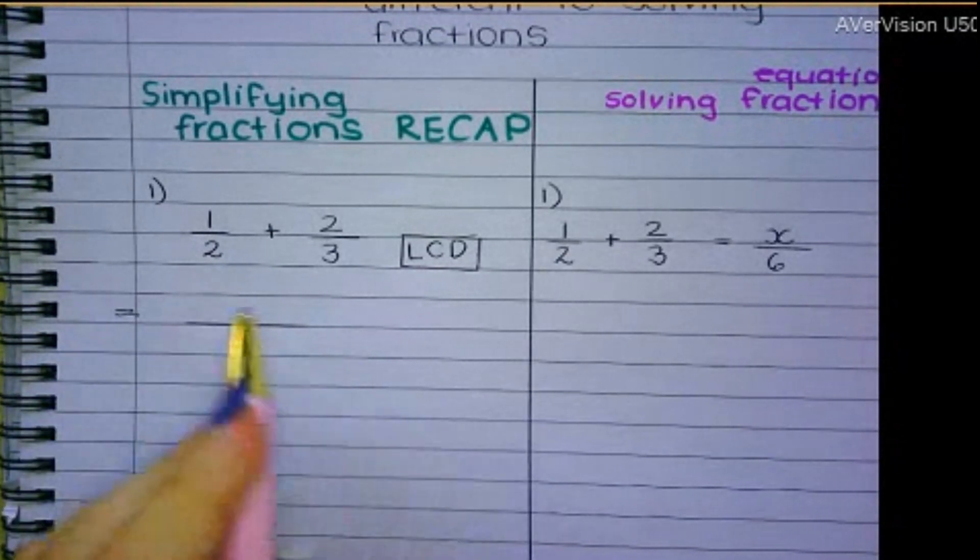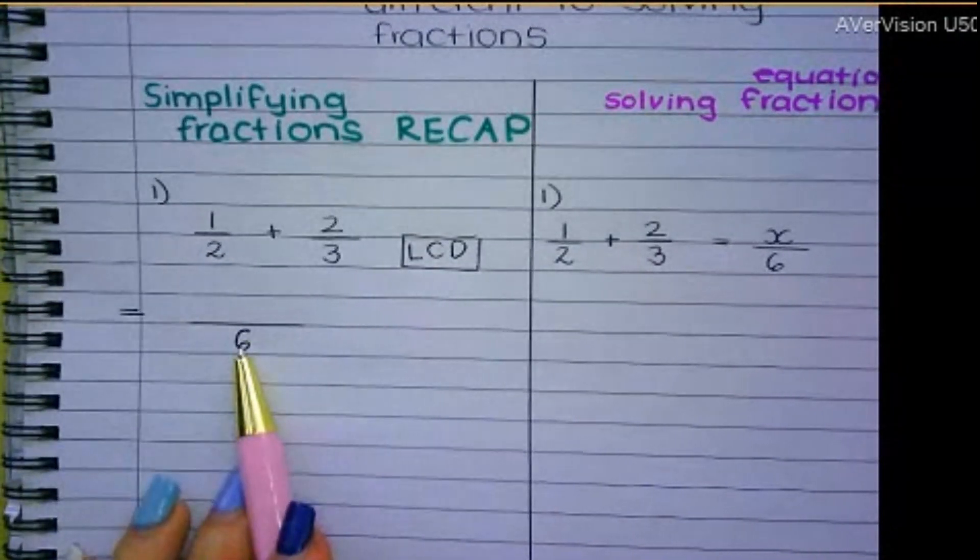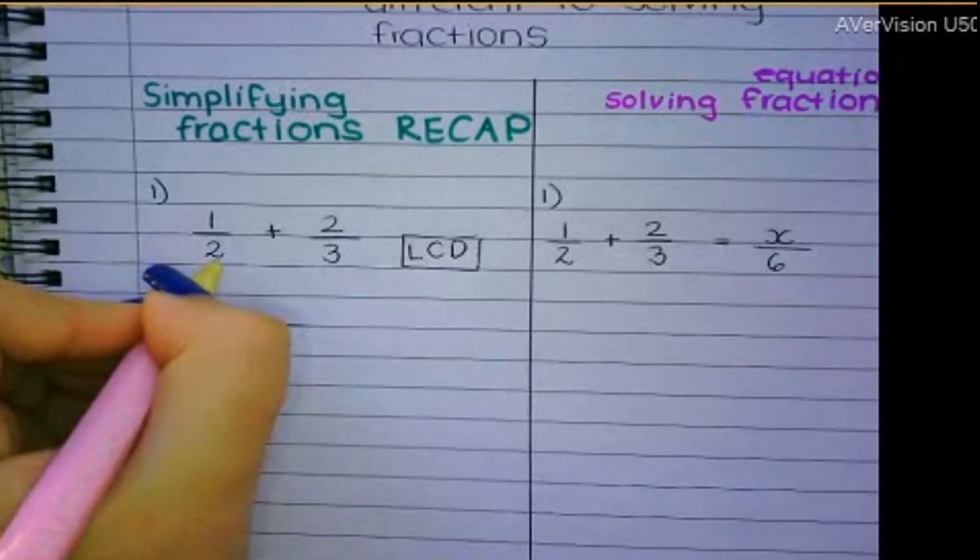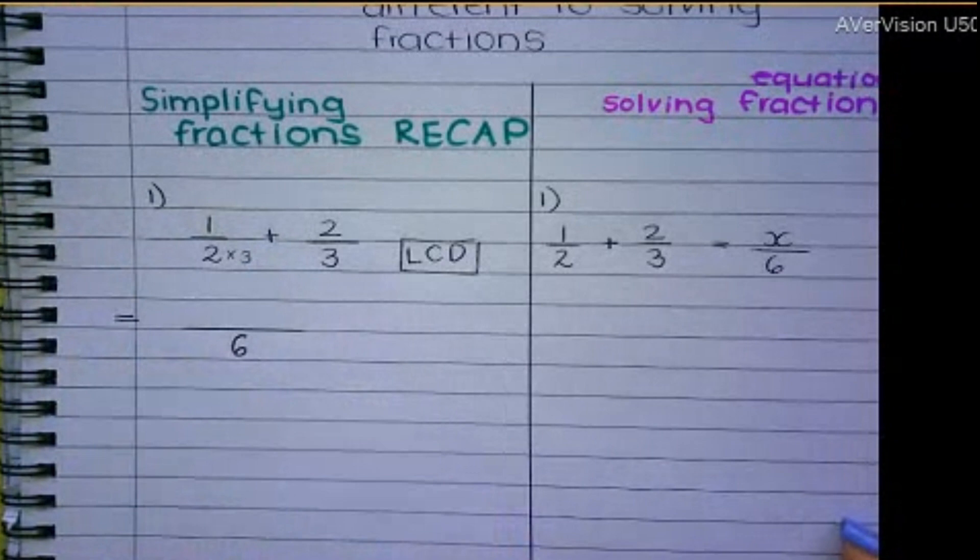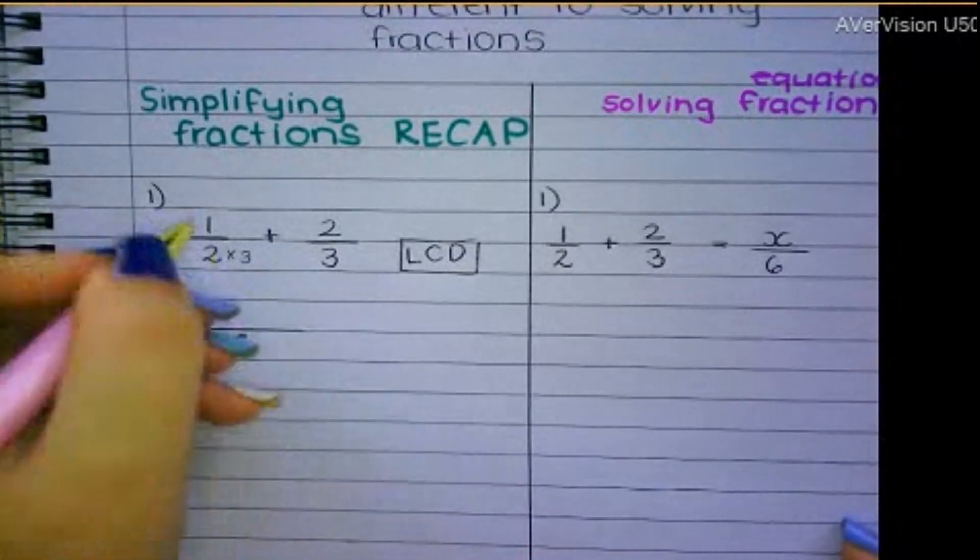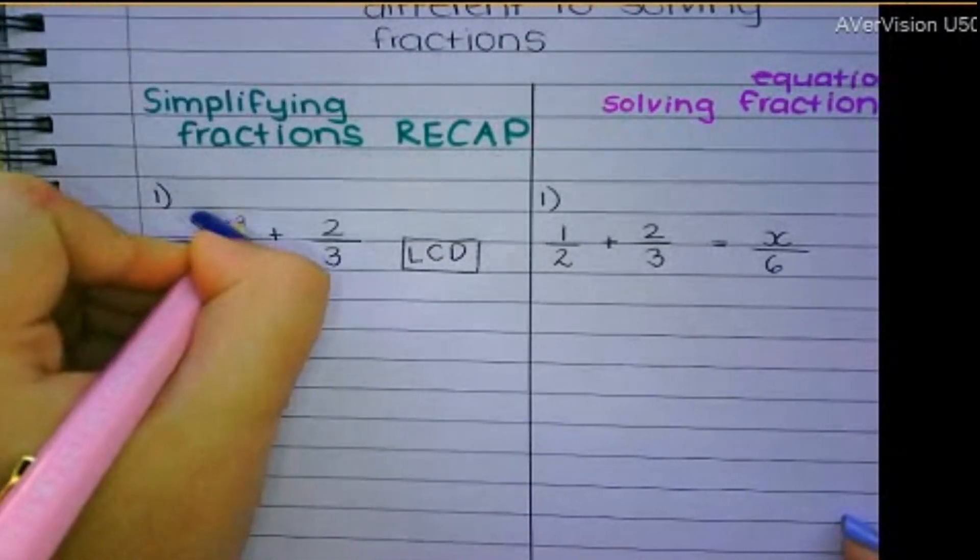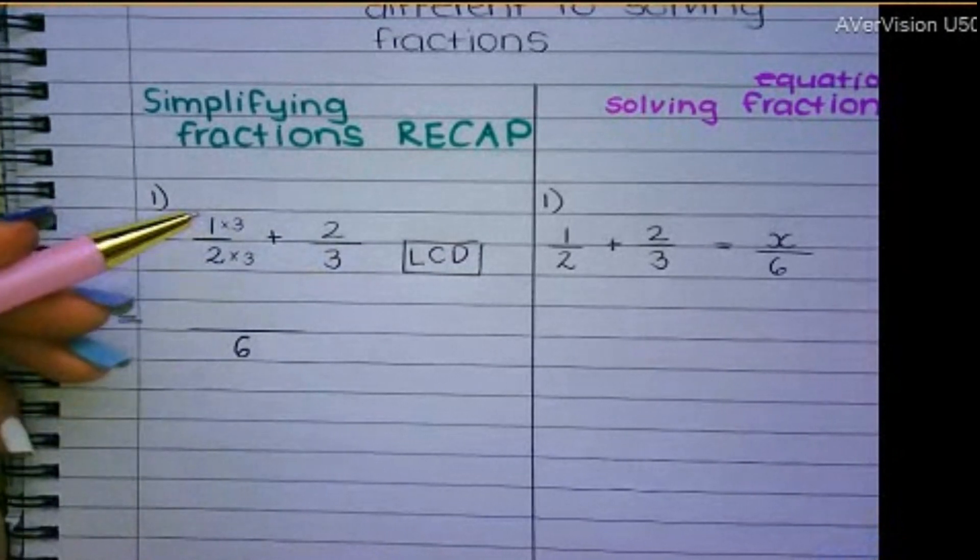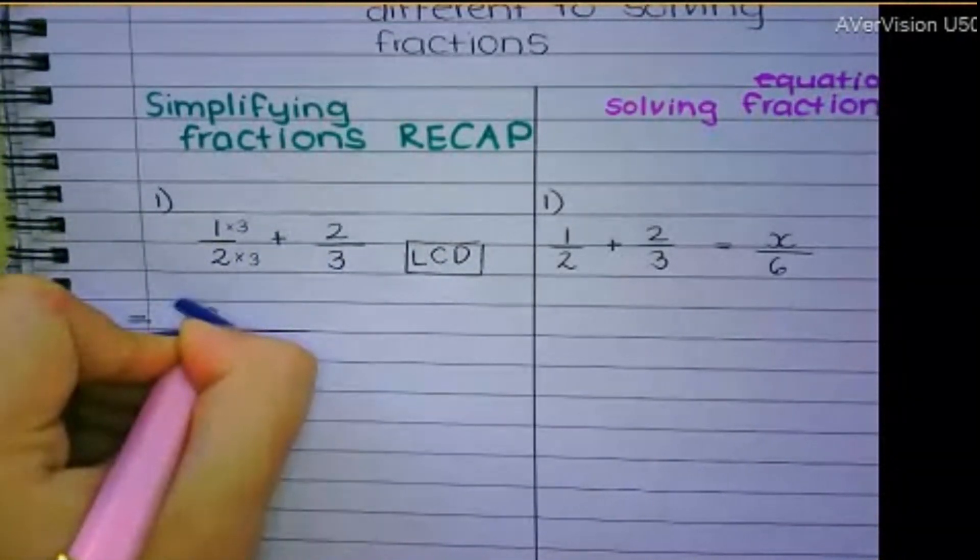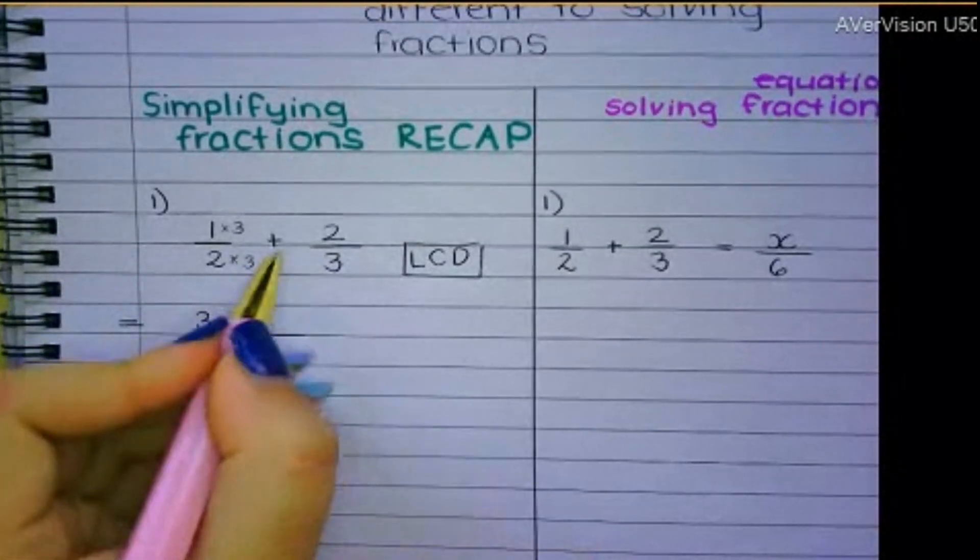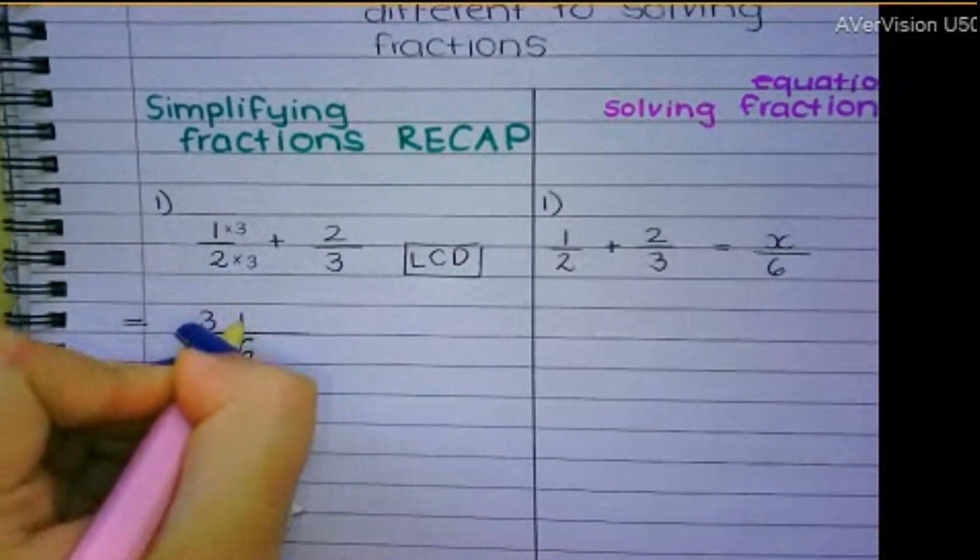So basically, I'm combining them and I want to make them over 6. So then you say to yourself, what must I do to 2 to get it to be 6? You must times it by 3. So that means I need to times the 1 by 3. Whatever you do to the bottom, you have to do to the top. So what is 1 times 3? 3.